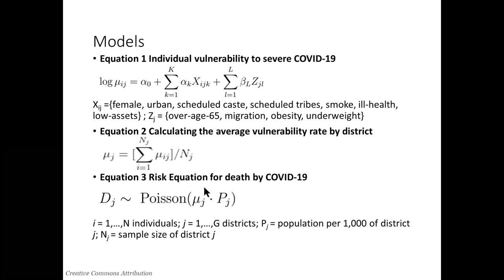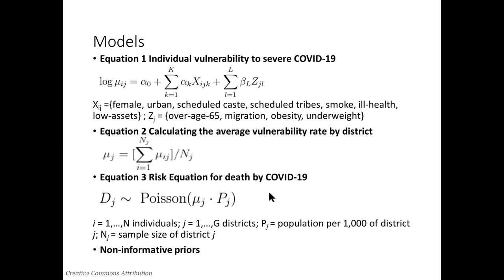We went through some tests to make sure we had the best choice of variables, including a variable for migration, because there was a lot of discussion around migration affecting the case risk for COVID, which would then feed into the death risk. Deaths are represented as d, the number of deaths is counted, and that's usually represented in a Poisson regression where mu is the rate of risk and p is the population in that district.